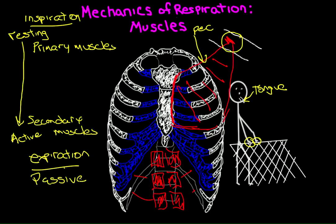Expiration is largely passive: when the lungs contract back to their original size, they take the rib cage passively with them, so the rib cage contracts back to its original size and shape. This suggests that the lungs and the inside of the ribs must be attached somehow — and they are, but it's not a firm attachment. It's a clinically relevant relationship between the lungs and the inside of the rib cage that we'll talk about in the last of our videos.